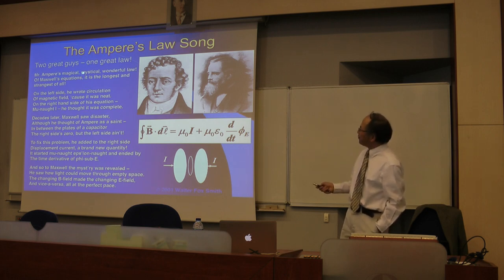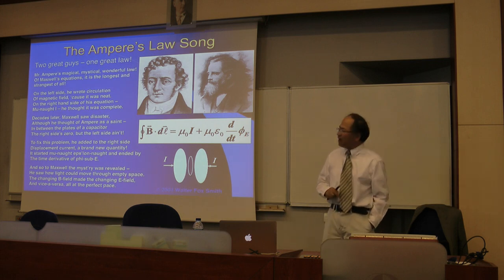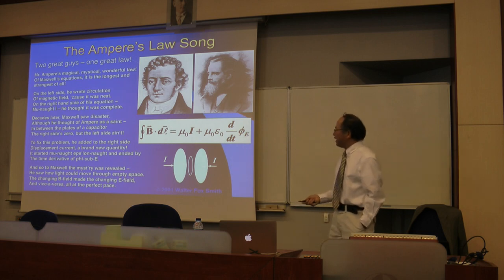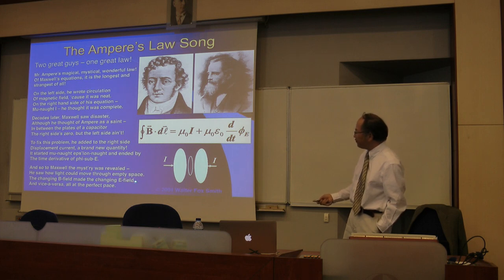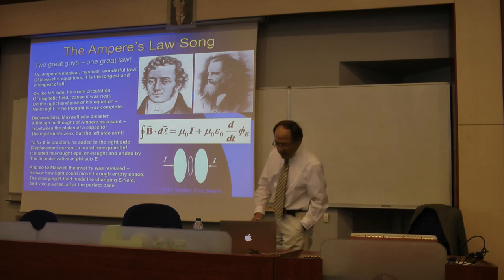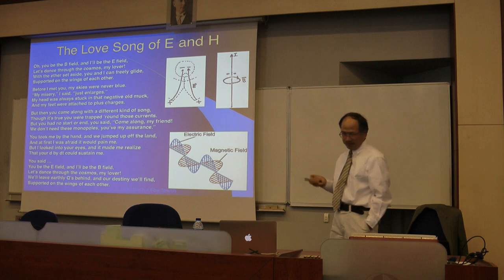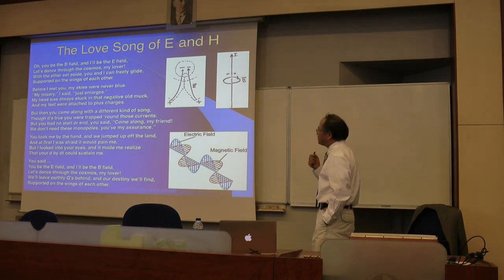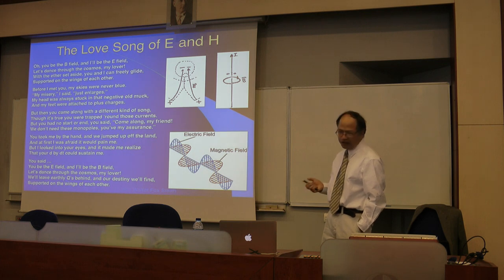To fix this problem, Maxwell introduced a new term called the displacement current, very similar to the term in Faraday's law. With the displacement current, electric field and magnetic field are fully coupled. Using his mathematical skill, he developed equations covering both fields and found that they are wave equations, showing that electric and magnetic fields can propagate in space. That led to his first prediction that electromagnetic fields can propagate, and his calculated speed matched the speed of light.